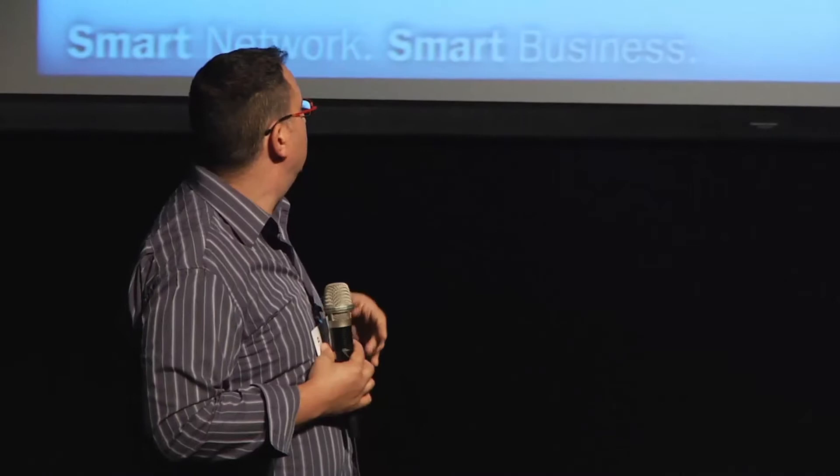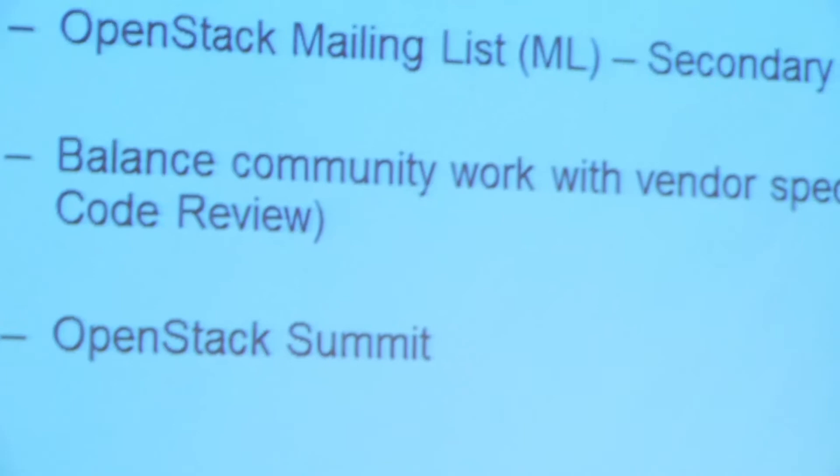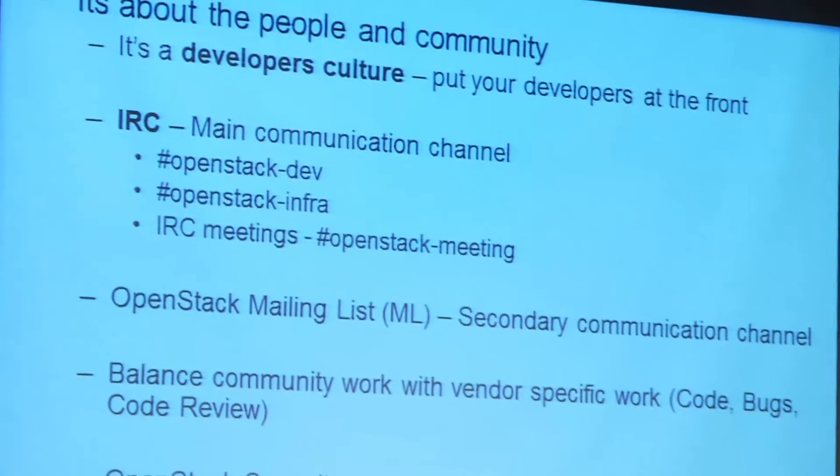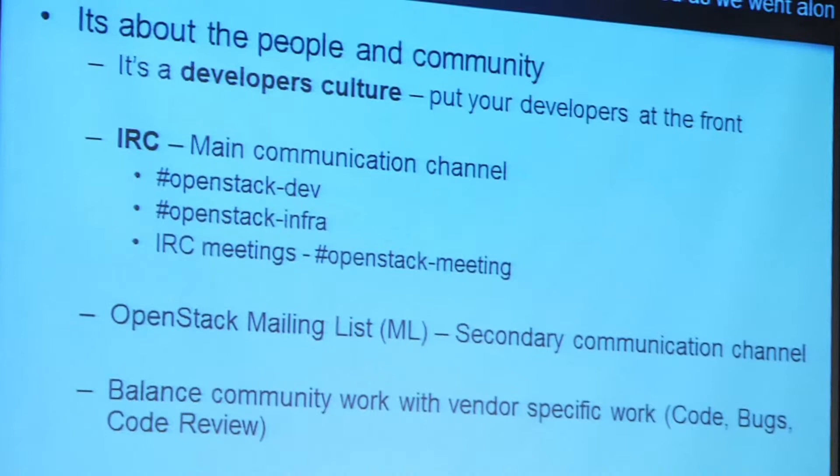It's a developer community, and the key main communication channel is IRC. For us, we thought we could communicate internally using emails and phones — but this is not available in a global community. You really can't communicate with people by phones and emails. IRC is the best way to communicate. The key channels we are using are OpenStack-dev and OpenStack-infra, and obviously there are meetings in the OpenStack meeting channel. I can't stress the importance of working with people over IRC enough, because without it there's a good chance you're not going to get your code reviewed, and a very good chance you won't get it in on time.